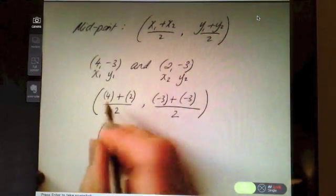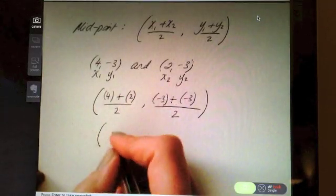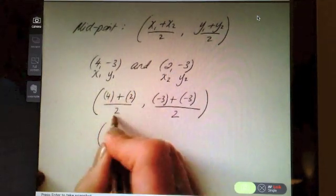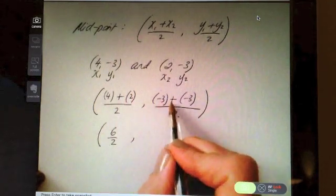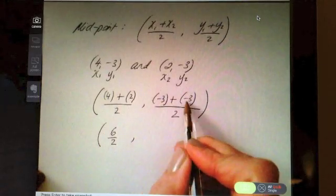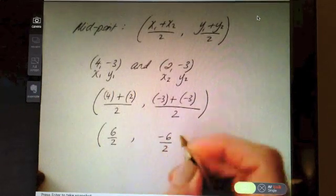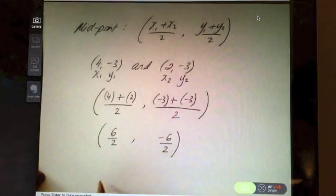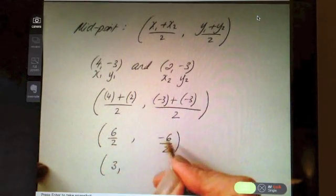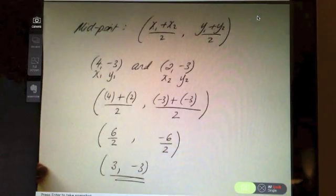Now again be careful with your calculations, be careful with your negative numbers. Double check anything you need to on the calculator. 4 plus 2 is 6, divide by 2, that's what I get on the top of that one. And -3 and -3, okay, think of your number line: you're down 3 and then you're down a further 3, which means you're down at -6. So now divide: 6 divide by 2 is 3, and -6 divide by 2 is -3. So (3,-3) is the midpoint.